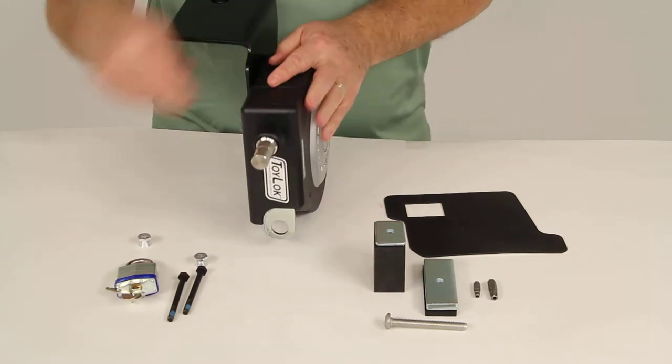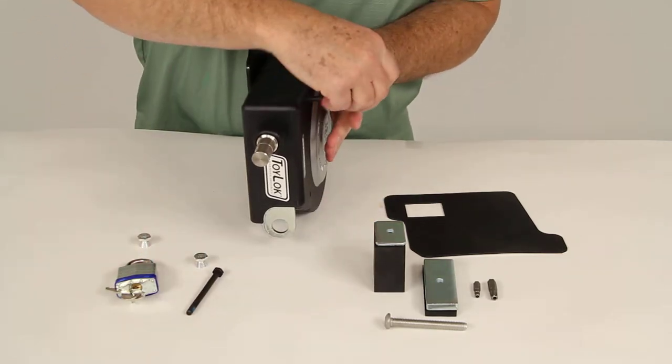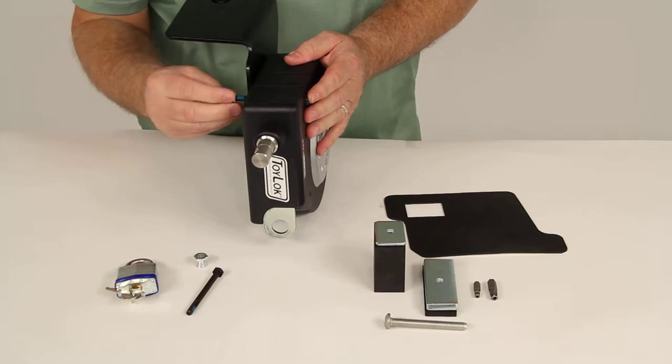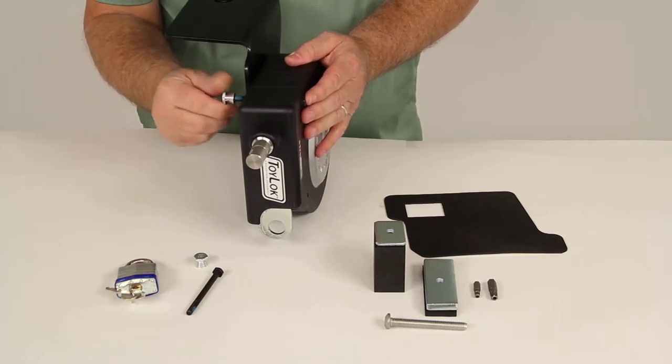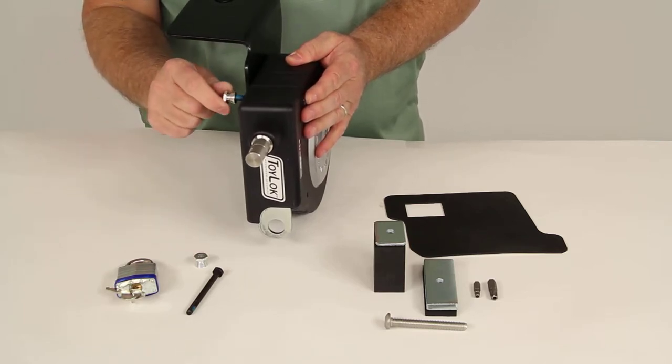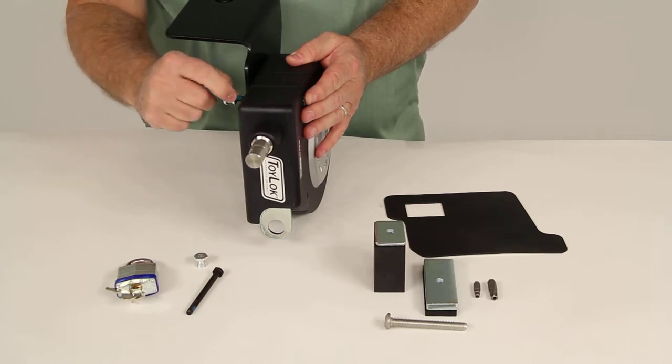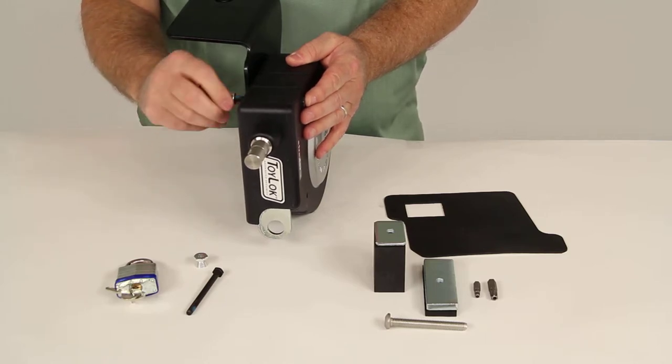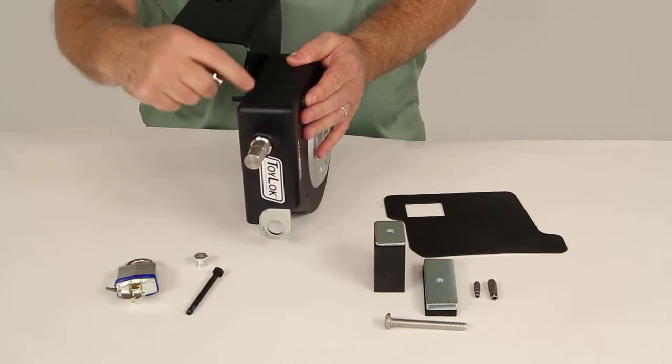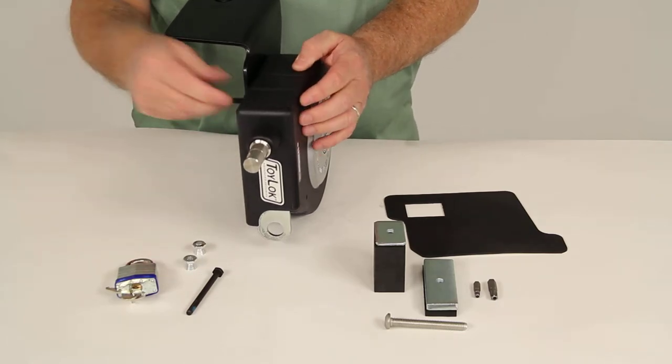Basically what's nice about that is when you mount this somewhere else besides the stake pocket and you use this hardware, you can tighten this down. And once you tighten it down enough, it'll break that nut off and just leave the cone shaped nut. And once that's tightened down, they can't unscrew it to remove this from wherever you have it mounted to steal your items.